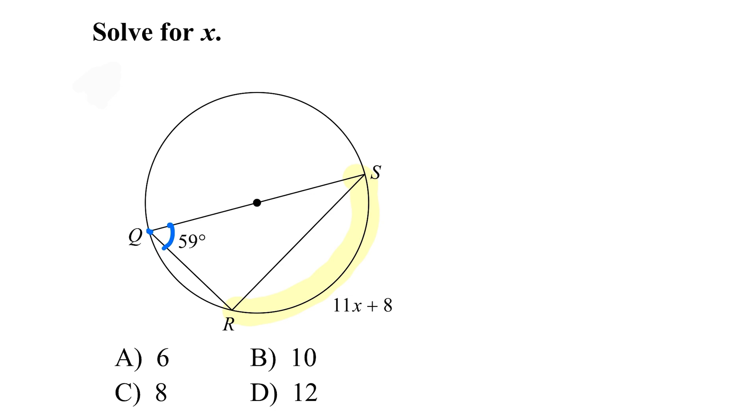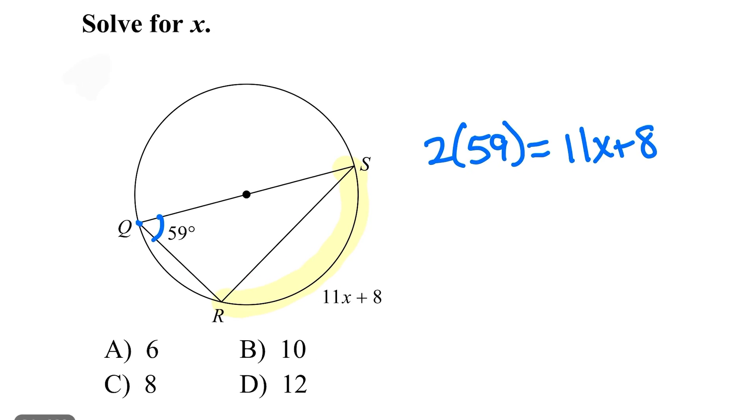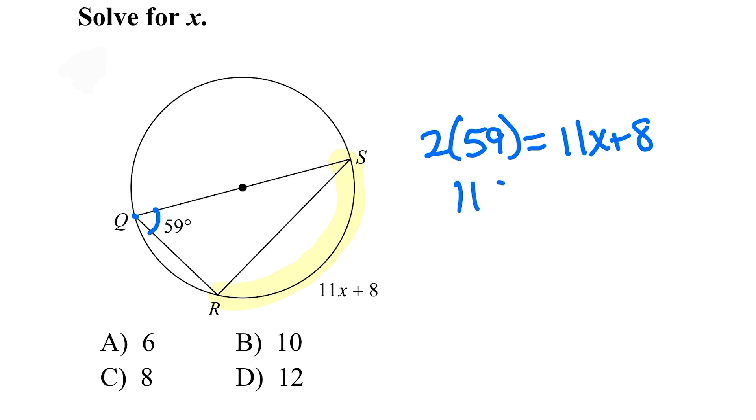So if we're going to try to solve this, we're going to take the 59 and double it, and set that equal to 11x plus 8. 59 times 2 is 118. That equals 11x plus 8.